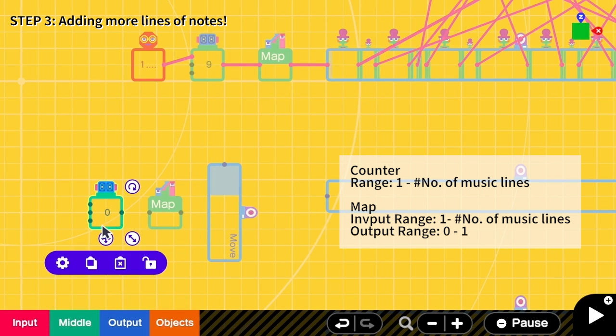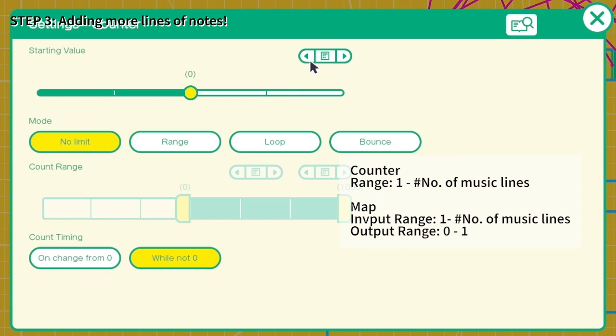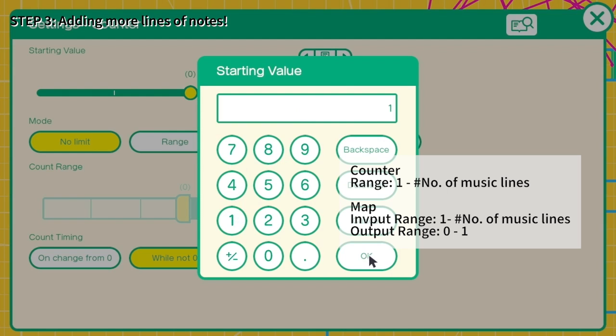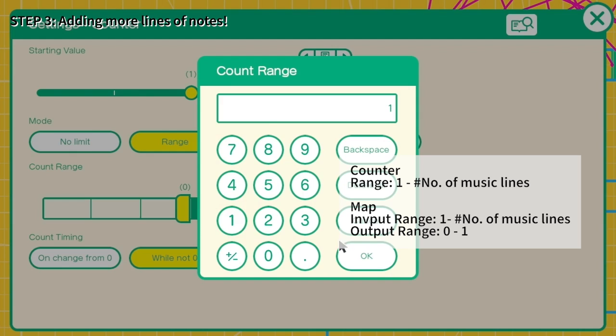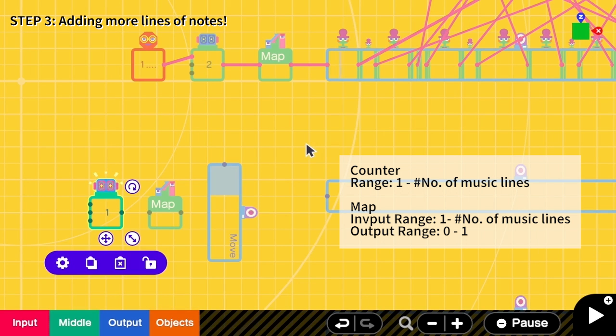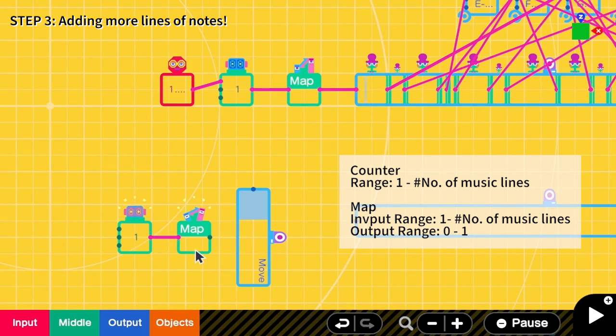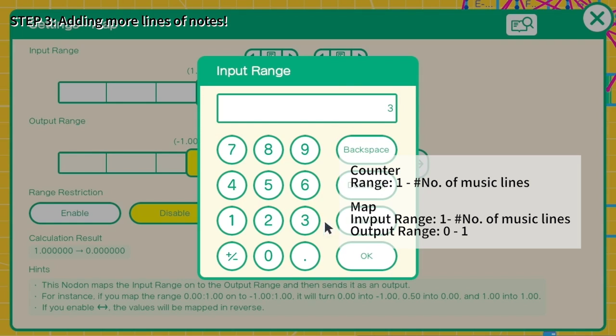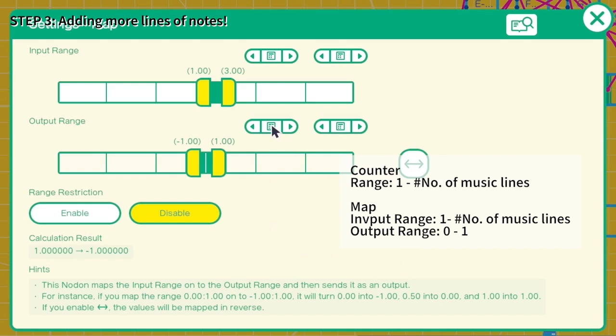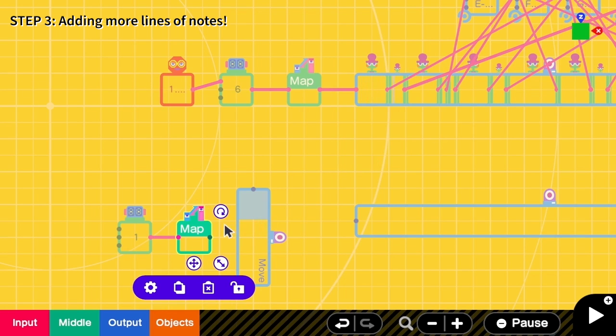So I change the range of the counter to be one and the range is from one to three. And this map input range is one to three and the output range here is from zero to one. And I connect the map output to this marker nodon.